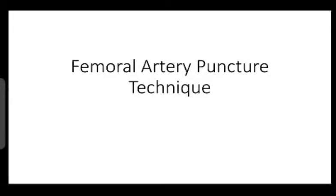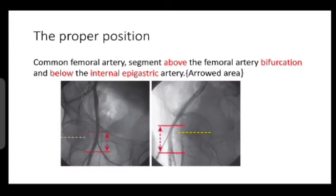Femoral artery puncture technique: the common femoral artery is the area which should be punctured. It is located above the femoral artery bifurcation and below the internal epigastric artery. The arrowed area — upper red line indicates the lower border of the internal epigastric artery, and the lower red line indicates the bifurcation of the common femoral artery. The yellow dotted line is showing the...